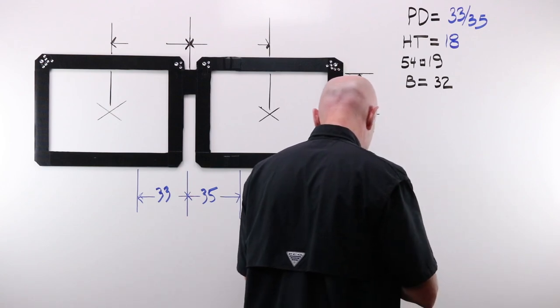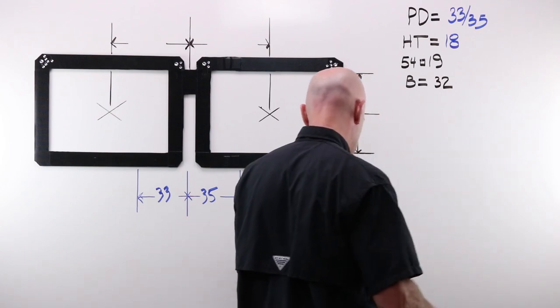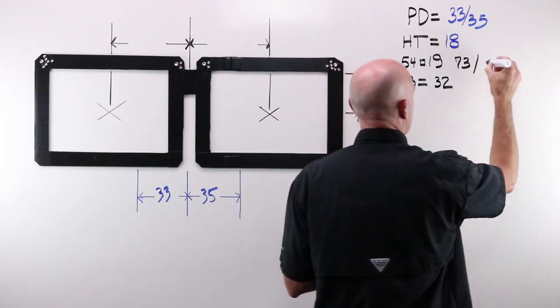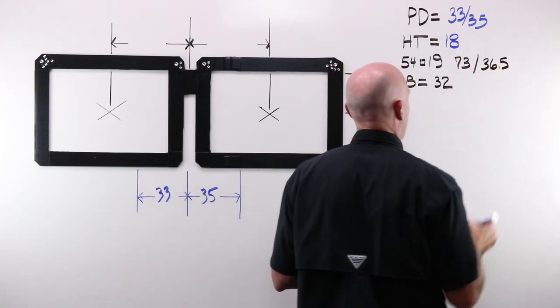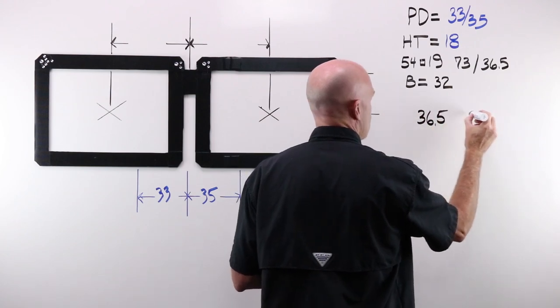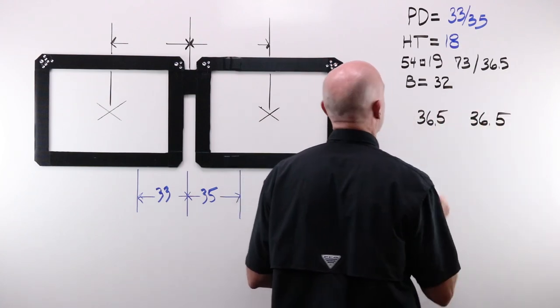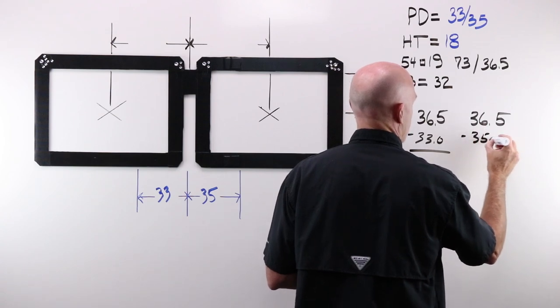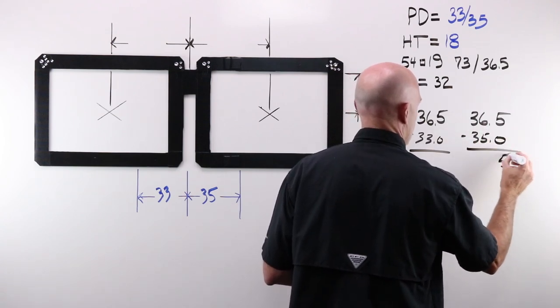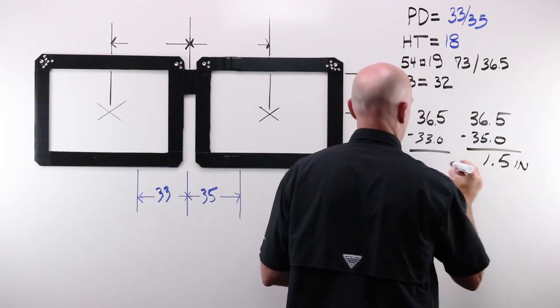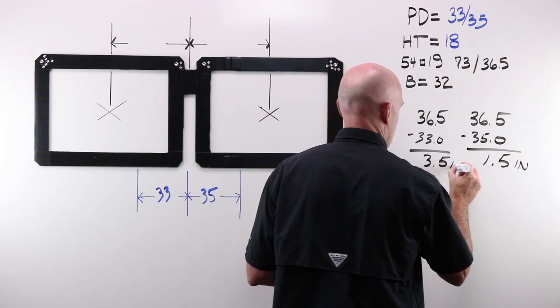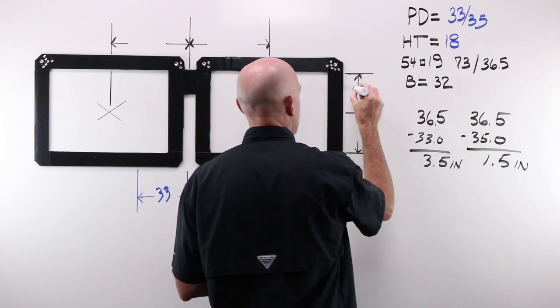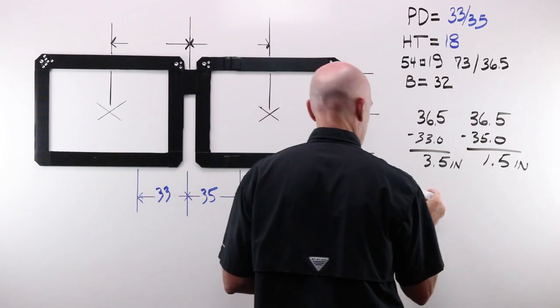What do we need? I've got 54-19 for my frame boxing system, which gives me a 73. 73 divided by two gives me 36.5. 36.5. 36.5. Minus 33. Minus 35. Minus 35. I've got a B of 32. Gives me 16. 16. 16.